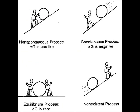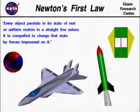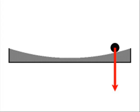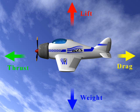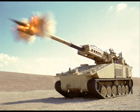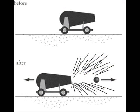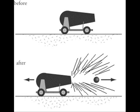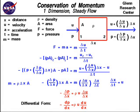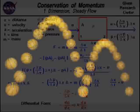An object at rest will stay at rest unless an outside force is applied. When there are unbalanced forces on an object, it causes the object to move. This means that whenever an object moves, its change in acceleration is always due to unbalanced forces. But more important than the law of inertia is the law of conservation of energy: energy can neither be created nor destroyed — it simply changes form.